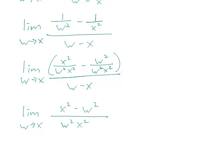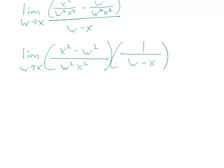And remember that since we're dividing that whole fraction by w minus x, it's the same as multiplying by 1 over w minus x. And you may be able to see where the cancellation is going to happen now.